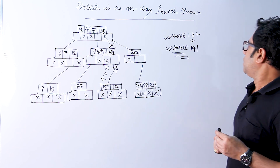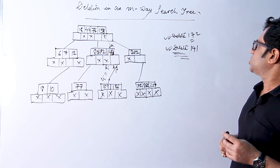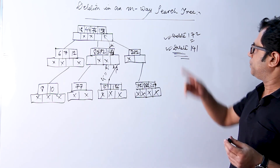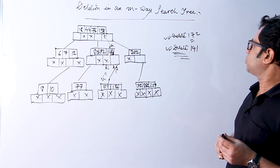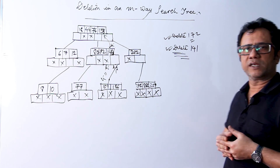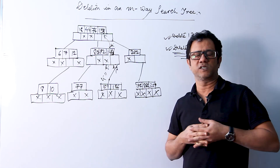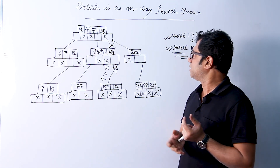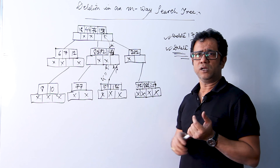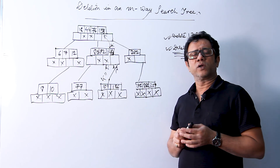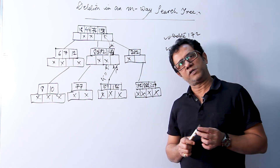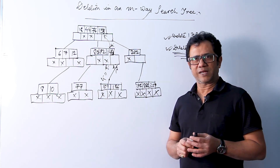This is the explanation by means of an example of the deletion process in an M-way search tree. If you have any doubts or queries pertaining to this explanation, you can post them in the comment section below so that I can address them. Thanks for watching this video.